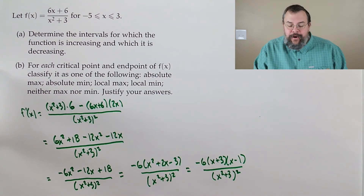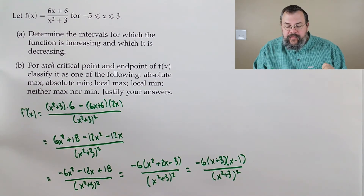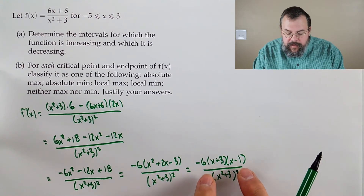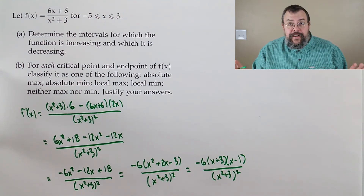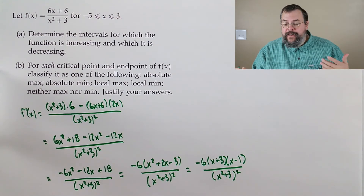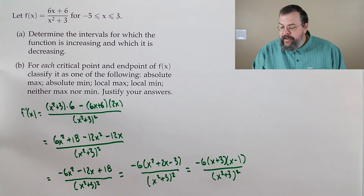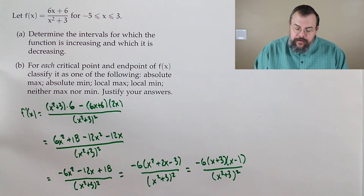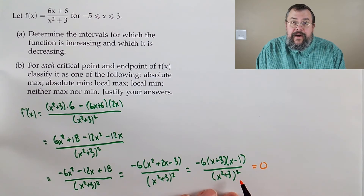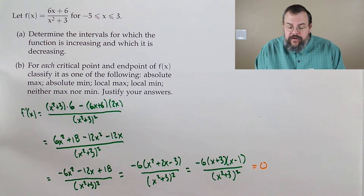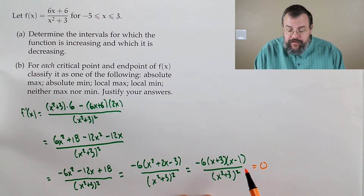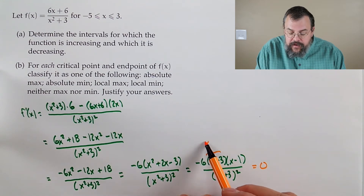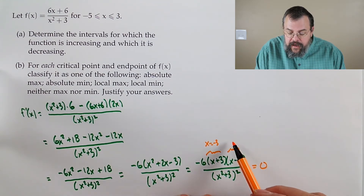Can we factor x squared plus 2x minus 3? We need two numbers that multiply to give negative 3 and add to give positive 2 — like 3 and negative 1. So we get negative 6 times (x plus 3)(x minus 1), divided by (x squared plus 3) squared. Always check: x squared minus x plus 3x is plus 2x, and minus 3. The derivative is never undefined, so critical points come from setting the numerator to zero.